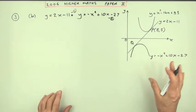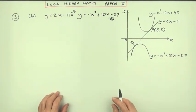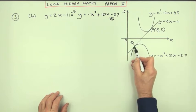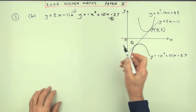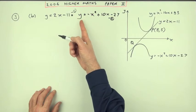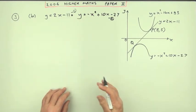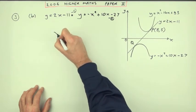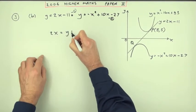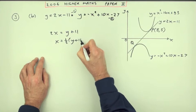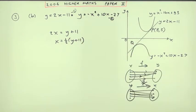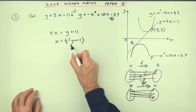Before going to the alternatives for A and B, I'll mention the other method the marking scheme suggests for finding Q: substituting for x rather than y. You'd rearrange the line as 2x equals y plus 11, so x equals half of y plus 11, and then substitute that into the curve equation. I'll show how awkward this is — you'd substitute into the curve, replacing x with half of y plus 11.